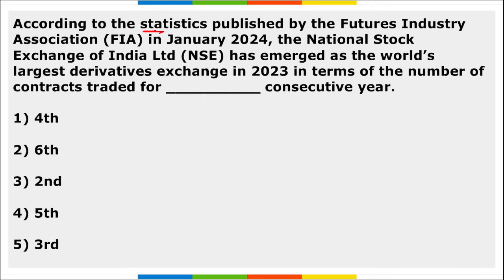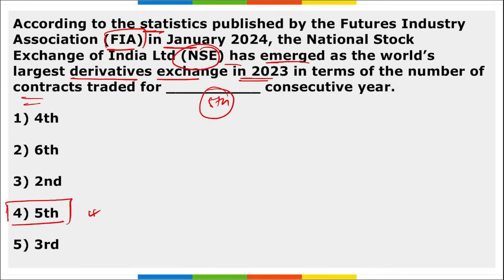According to statistics published by the Futures Industry Association in January, the National Stock Exchange of India (NSE) emerged as the world's largest derivatives exchange in 2023 in terms of number of contracts traded, for the fifth consecutive year.